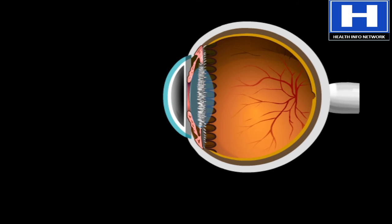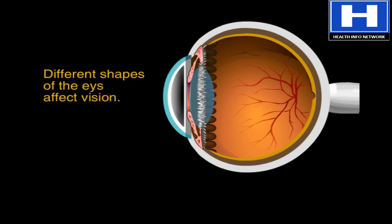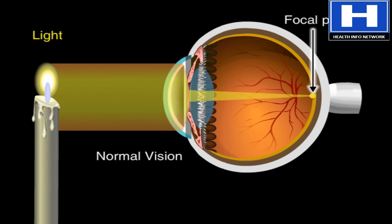Now let's consider two common conditions that cause blurry vision. The eye's shape is important for keeping things in focus. With normal vision, light focuses precisely on the retina at a location called the focal point.